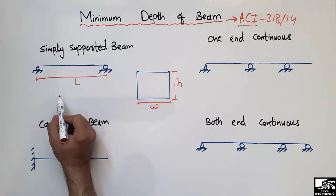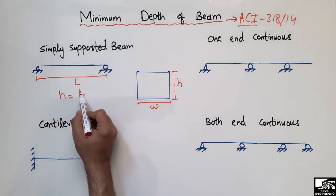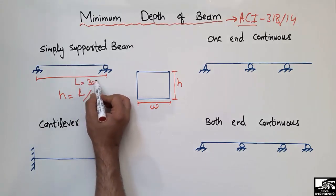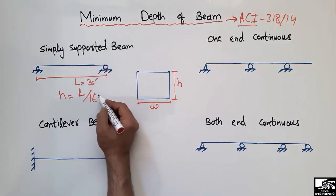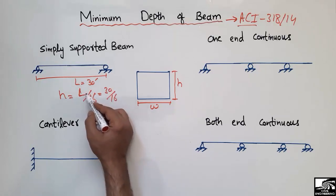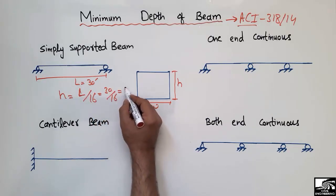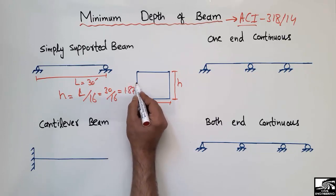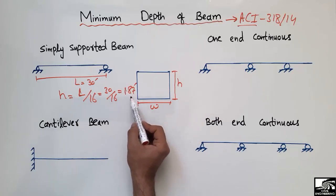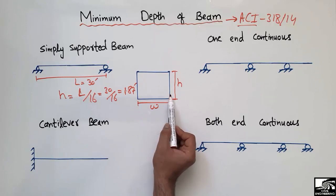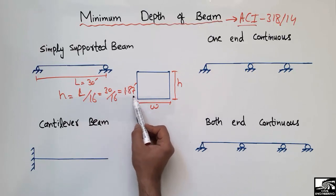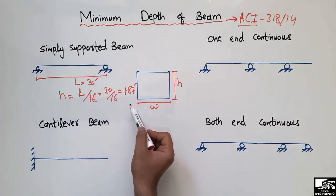According to the American Concrete Institute, the minimum depth of a simply supported beam is H = L/16. For example, if the length is 30 feet, the minimum depth equals 30 divided by 16, which comes out to approximately 1.87 feet. We should never assume a depth less than this value — our beam's minimum depth must be at least 1.87 feet.